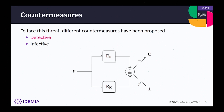The first countermeasure is called 'detective': we execute the algorithm twice. If both encryptions give the same ciphertext, it is output to the user. If a fault is injected in one of the two encryptions, the test fails and we either return no result, return a random result, or take more definitive security actions like destroying the device or erasing the key.